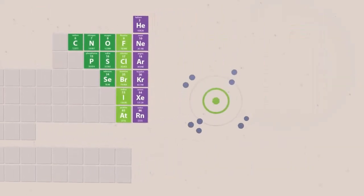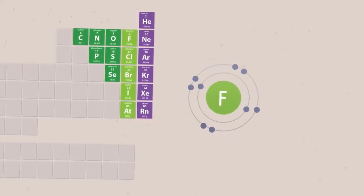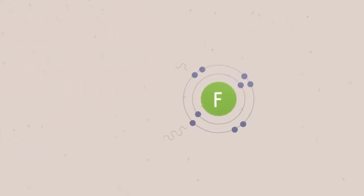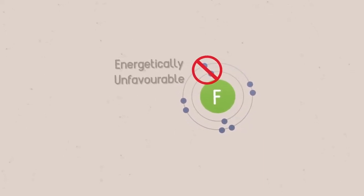They have shells of electrons that are normally half or more than half full of electrons. Since they have a strong attraction for a few additional electrons, it is energetically unfavourable for them to lose electrons.